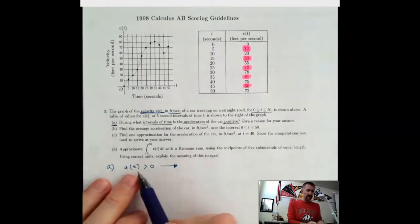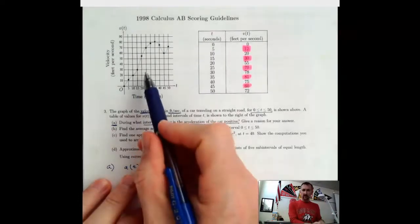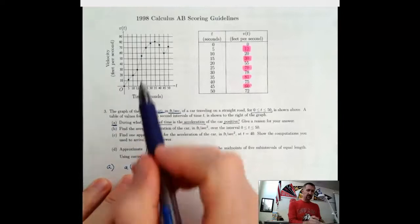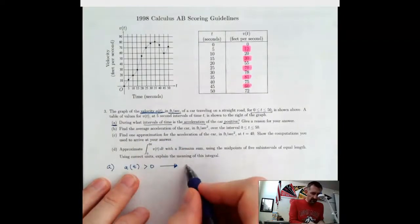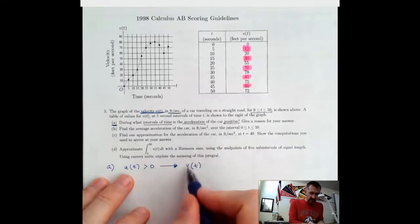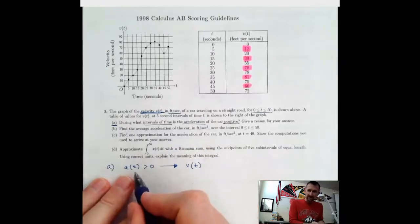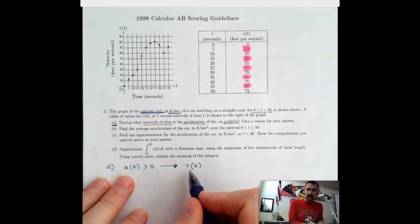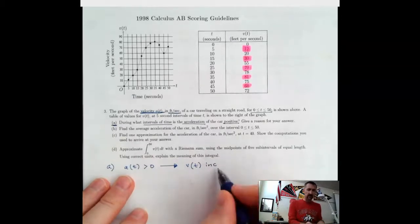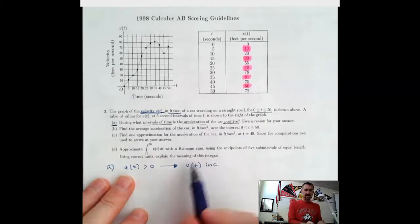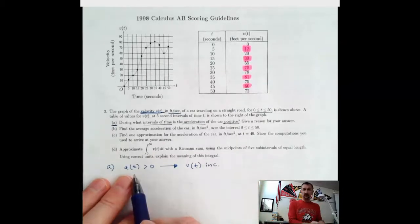If the acceleration is positive, they're talking about velocity here. Acceleration is the derivative of velocity. So if the velocity's derivative was positive, what does that mean should be happening with the velocity? It means the velocity should be increasing. If the velocity is increasing, that means the acceleration is positive.